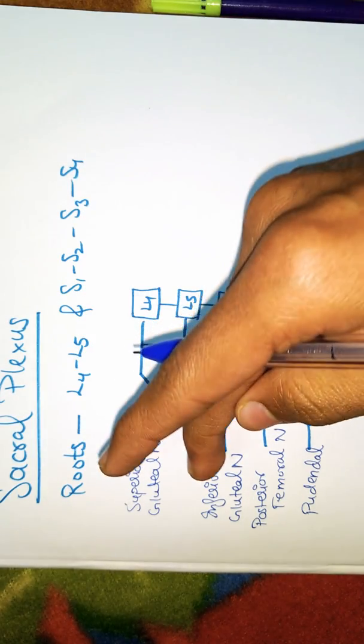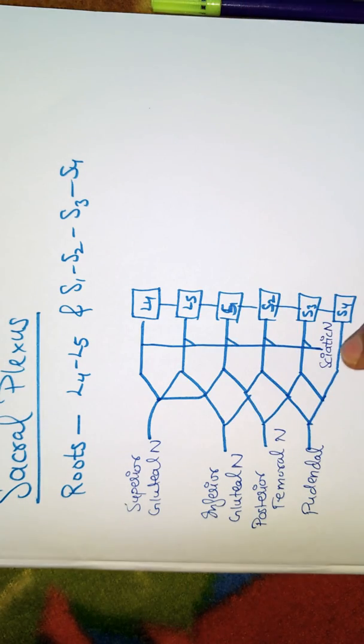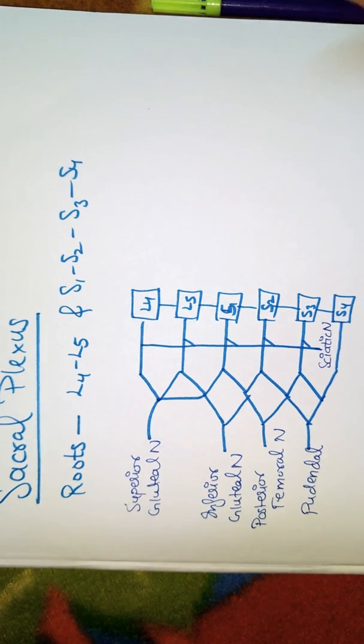Superior gluteal nerve, inferior gluteal nerve, posterior femoral nerve, pudendal, and here's your main sciatic nerve. How do you remember this?